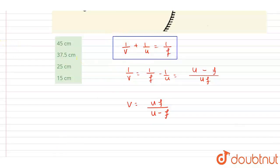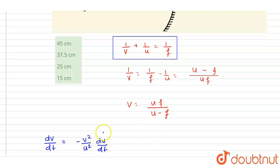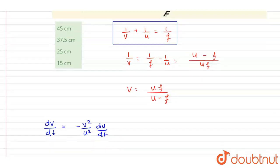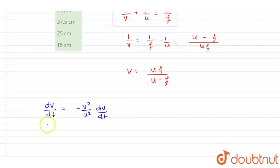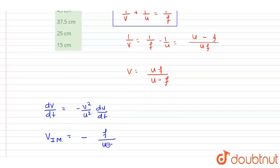Now if you differentiate the mirror formula, you get: −(1/v²)(dv/dt) = −(1/u²)(du/dt). So dv/dt, the rate of change of image distance from the mirror, equals −(v²/u²)(du/dt). Since the mirror itself is moving, these are velocities with respect to the mirror. So dv/dt equals −(f/(u−f))² times the object velocity with respect to the mirror.